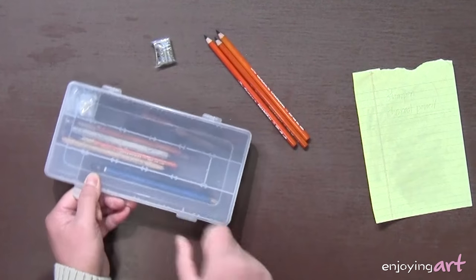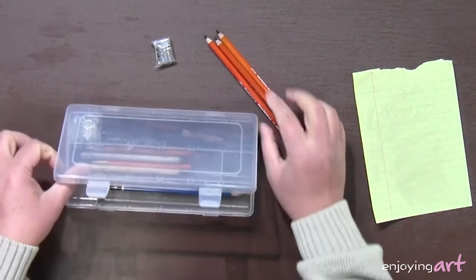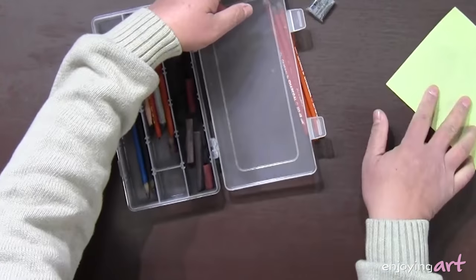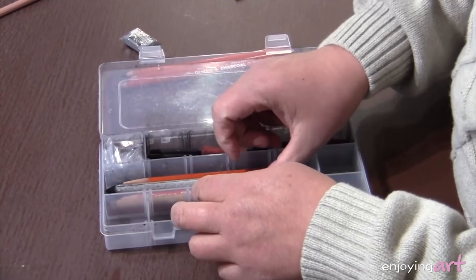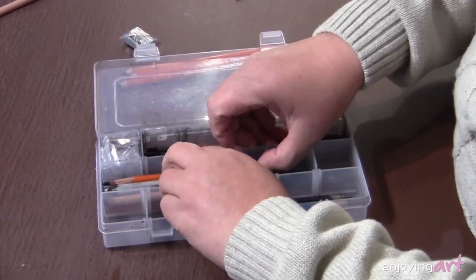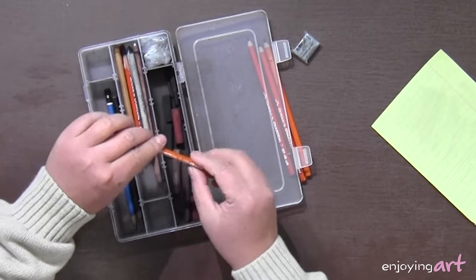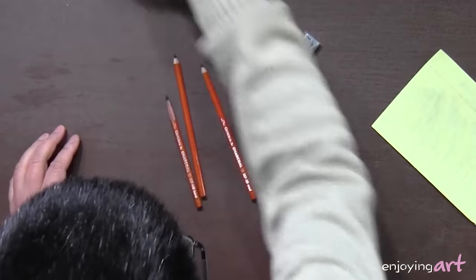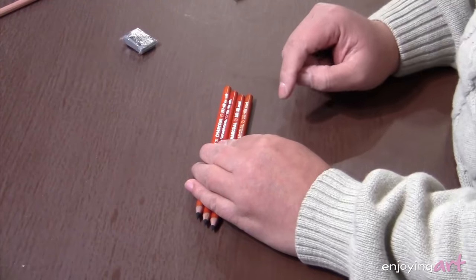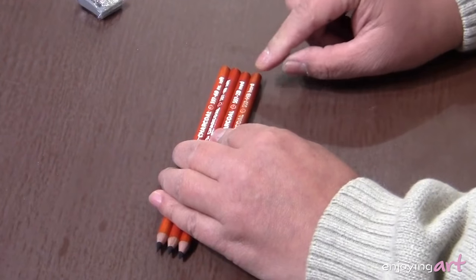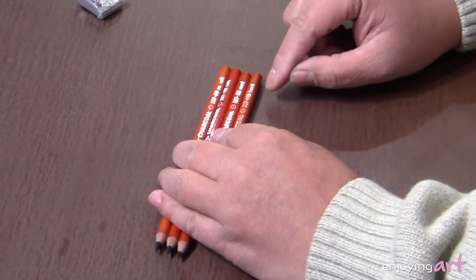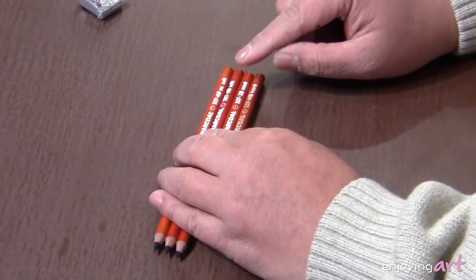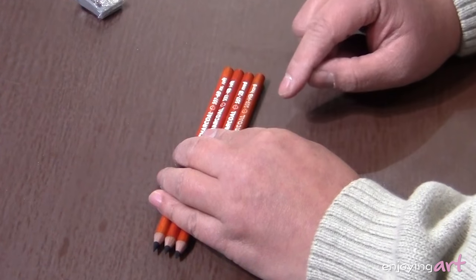I'll get my existing pencil toolbox. I have a hard charcoal pencil. The hard charcoal pencil is equivalent to HB. The medium is equivalent to 2B, the soft is 4B, and the extra soft is 6B.